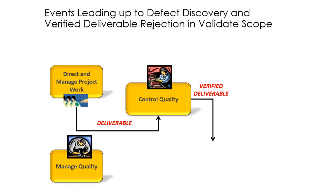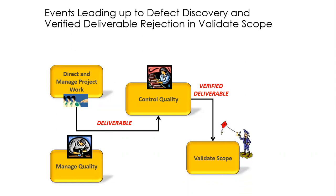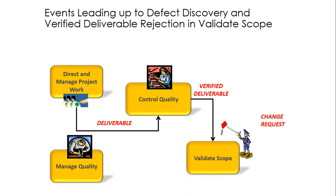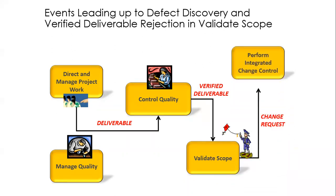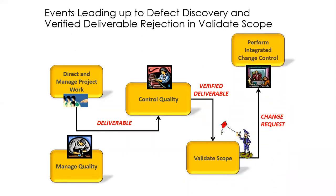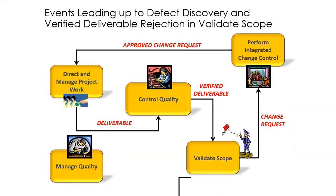The verified deliverable becomes an input to a new process we haven't talked about yet — validate scope. In validate scope, this is where the customer checks the deliverable for themselves. Here the customer is checking the deliverable, but it fails the test and therefore the customer requests a change. That change request goes to perform integrated change control again, where the change control board will review it and, assuming they approve the change request, it goes back into the cycle.